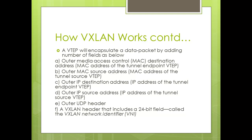Outer IP source address — the IP address of the tunnel source VTEP. Outer UDP header — the UDP header is used for load balancing over ECMP on the core routers. Finally, a VXLAN header that includes a 24-bit field called VNI, the VXLAN Network Identifier. This 24-bit field provides as many as 16 million broadcast segments.